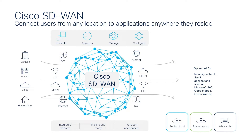Service providers can use Cisco SD-WAN to interconnect to applications and workloads residing in their on-premises data centers, private cloud, or public cloud, such as AWS, Azure, and Google Cloud, using flexible transports such as internet, MPLS, 4G, and 5G.